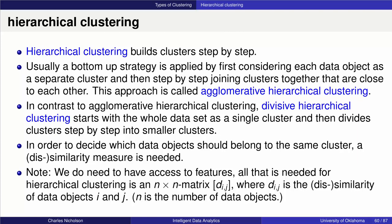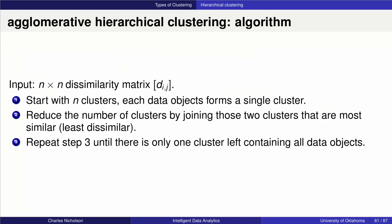Given this dissimilarity matrix, in the agglomerative approach you start with n clusters — each object is its own cluster. You then find the element in the matrix with the smallest value, representing the two data objects that are closest together. You combine those two to create a new cluster, so now you end up with n minus one clusters. Most clusters remain single-object clusters, but one cluster has combined two data objects.